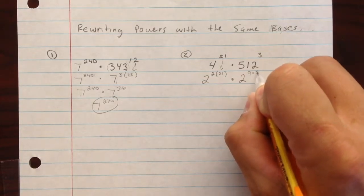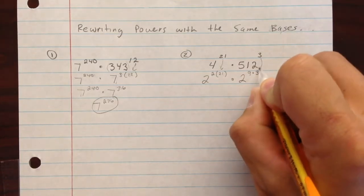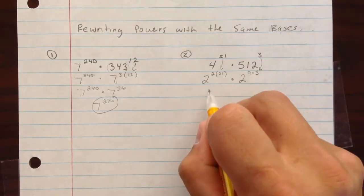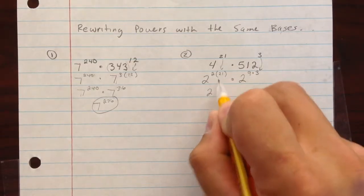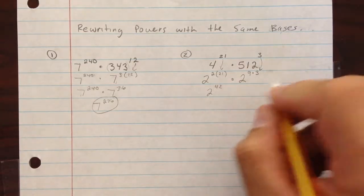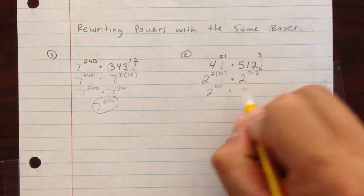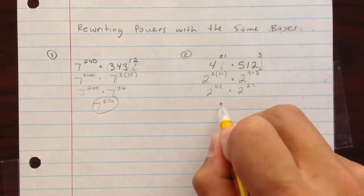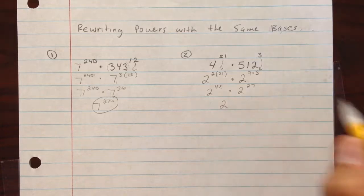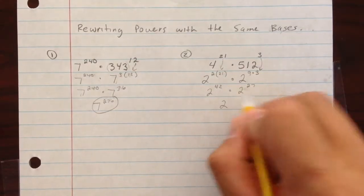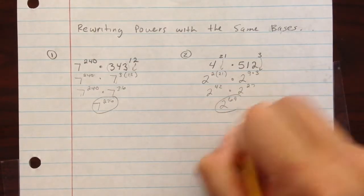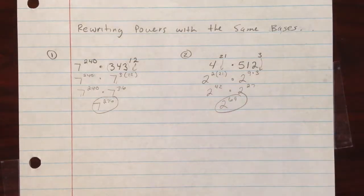Bring down the 3 from up here, because 2 to the 9th is 512. Then you'll have 2 to the 42nd times 2 to the 27th. Bring those down to one base of 2 and add together 42 and 27 to get 2 to the 69th. Again, a very large number that we don't need to evaluate.